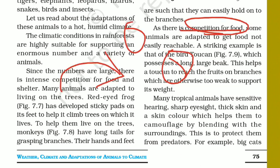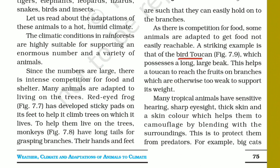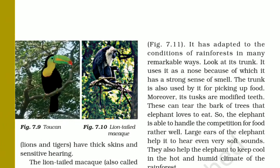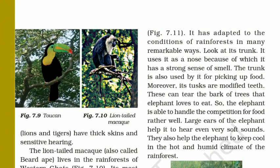If we talk about the toucan bird — the large toucan bird — it possesses a long and large beak. This long and large beak helps it reach fruit on the branches. You can see pictures of the large toucan bird here. If it is sitting on a particular branch, its beak helps it reach a particular fruit hanging on a very thin branch that would not support its weight if it sat there directly.